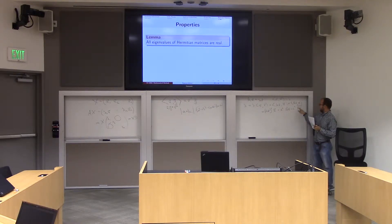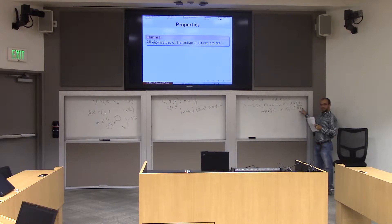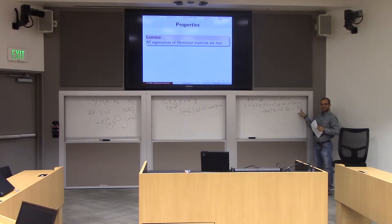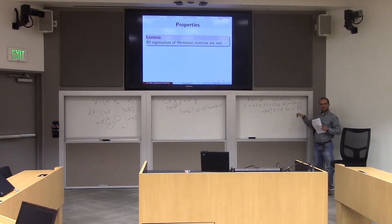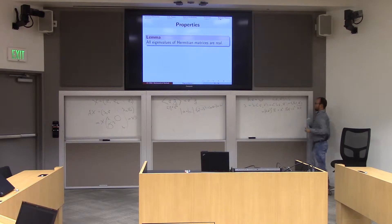Right? Because this is the conjugate of a product — I can move this bar into the inside as the product of the conjugates. So then you have a bar bar, and the bars cancel out, and you put a bar in. So what is the conjugate of a transpose? A's Hermitian, so the conjugate of a transpose is just A.